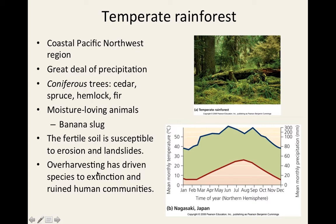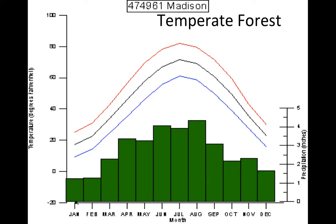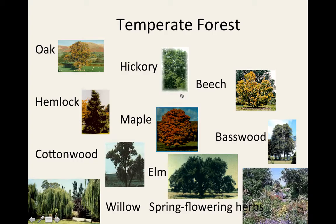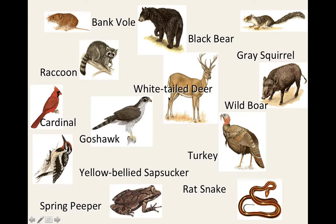A major issue in the temperate rainforest region is deforestation — harvesting of hardwood trees is causing some species to become extinct due to human activity. Common trees include oak, hickory, beech, maple, and hemlock. Animals you'll find in these regions include deer and turkeys.